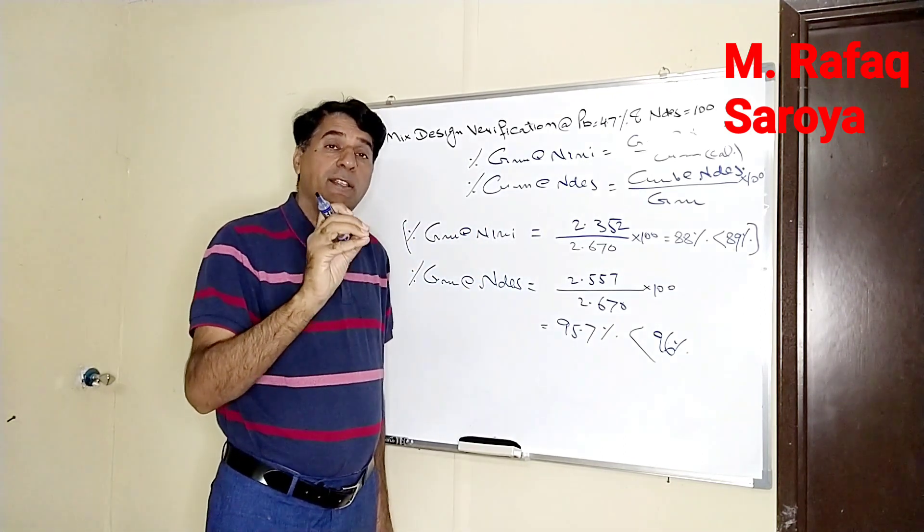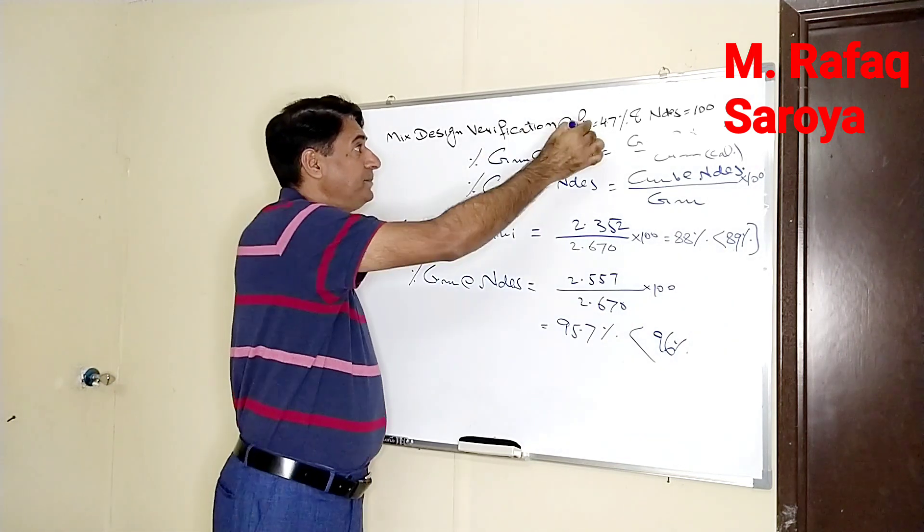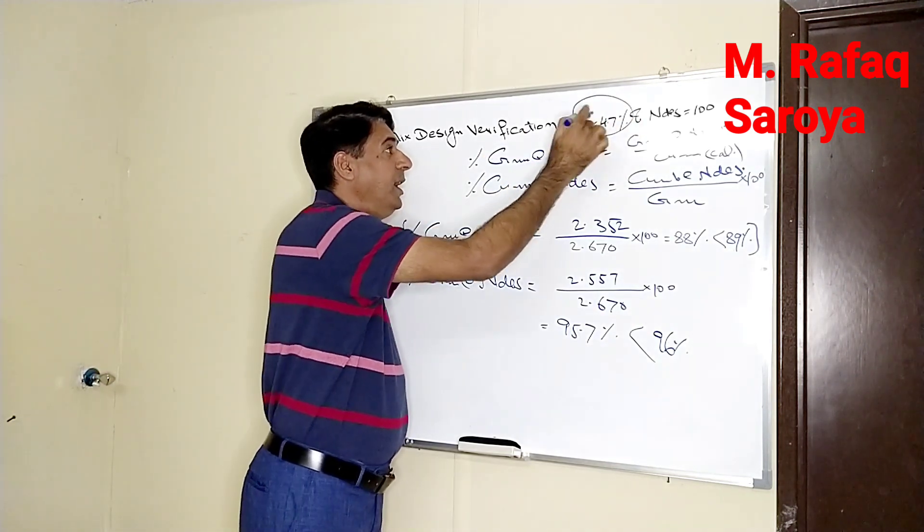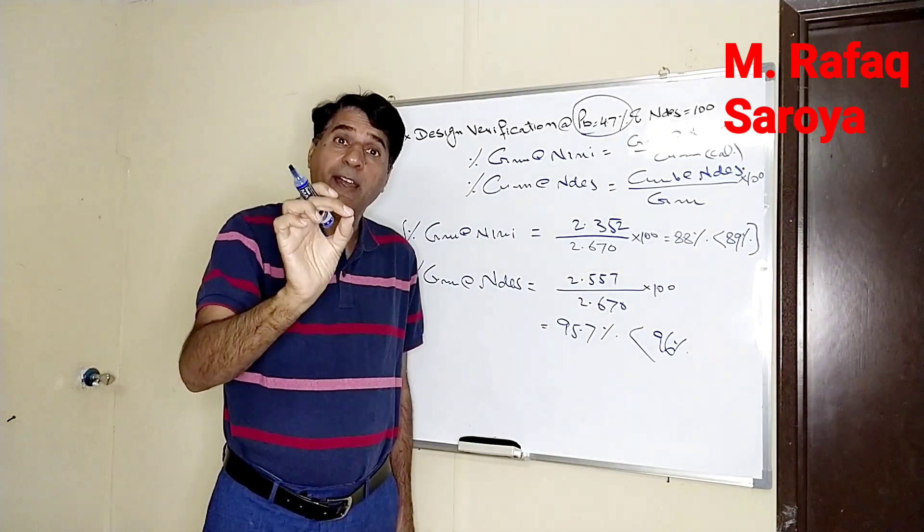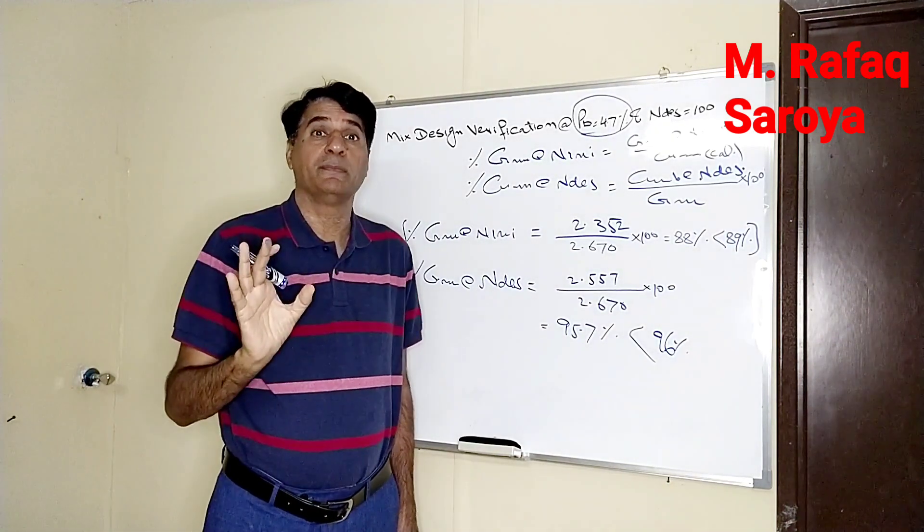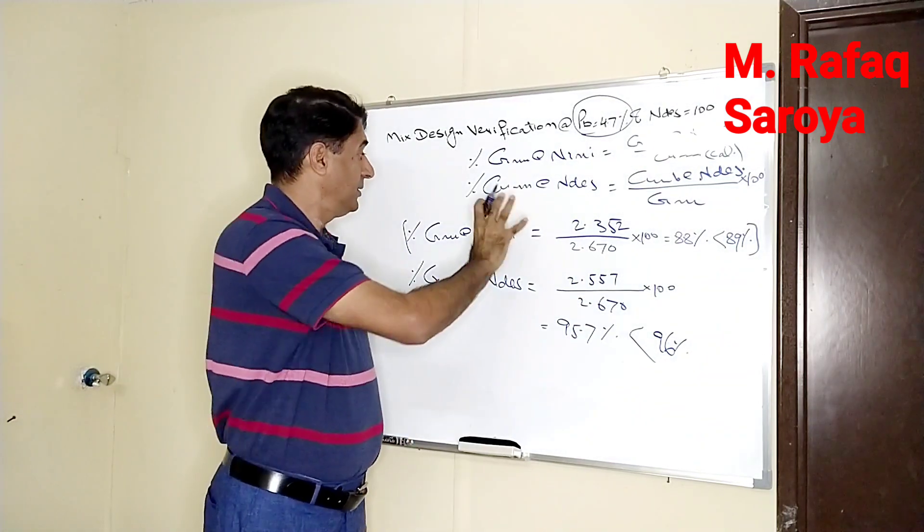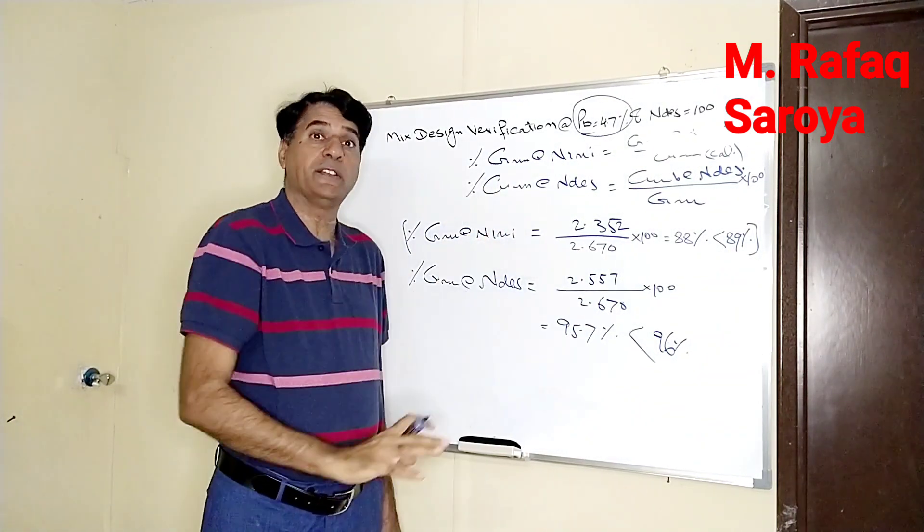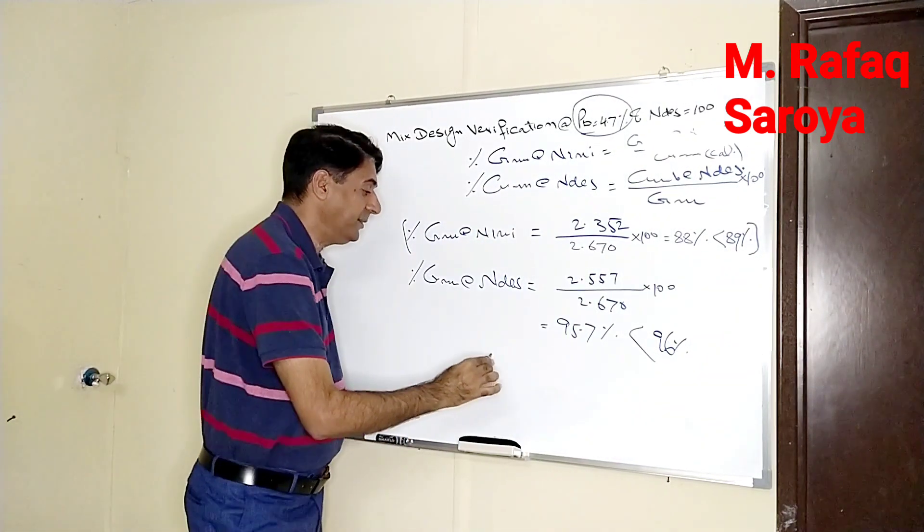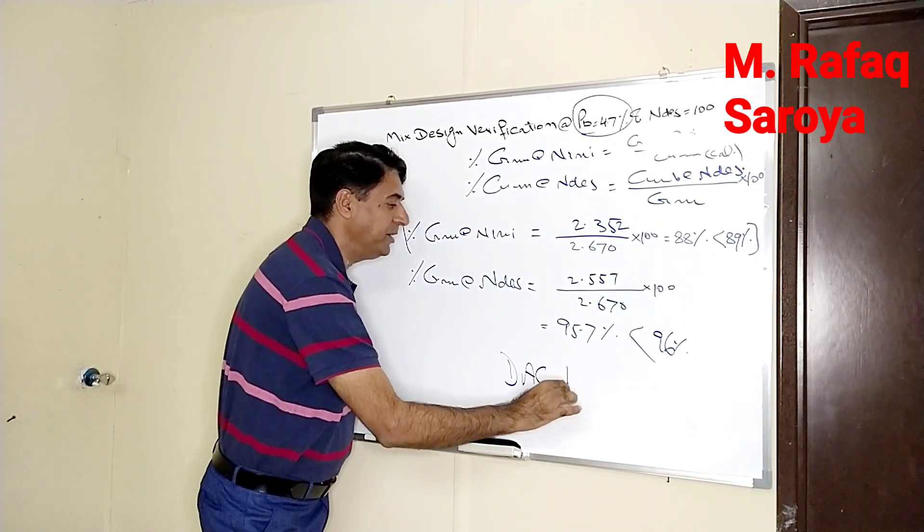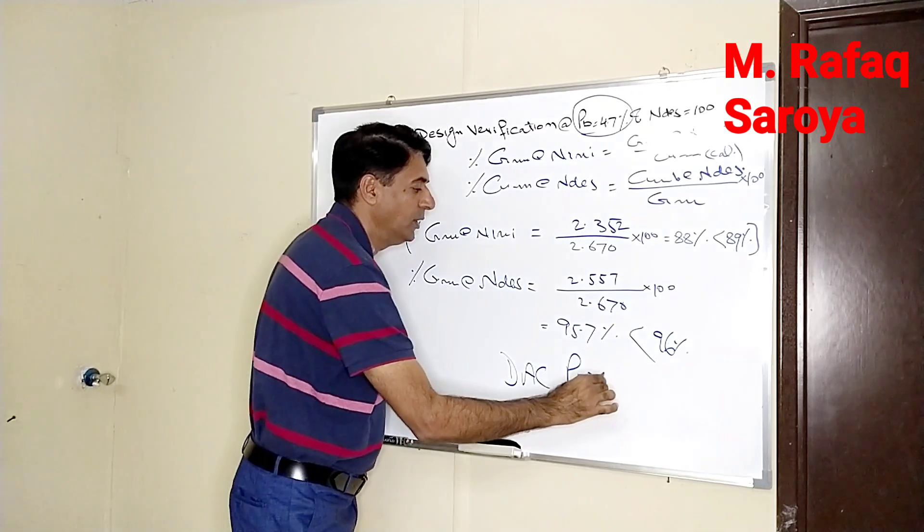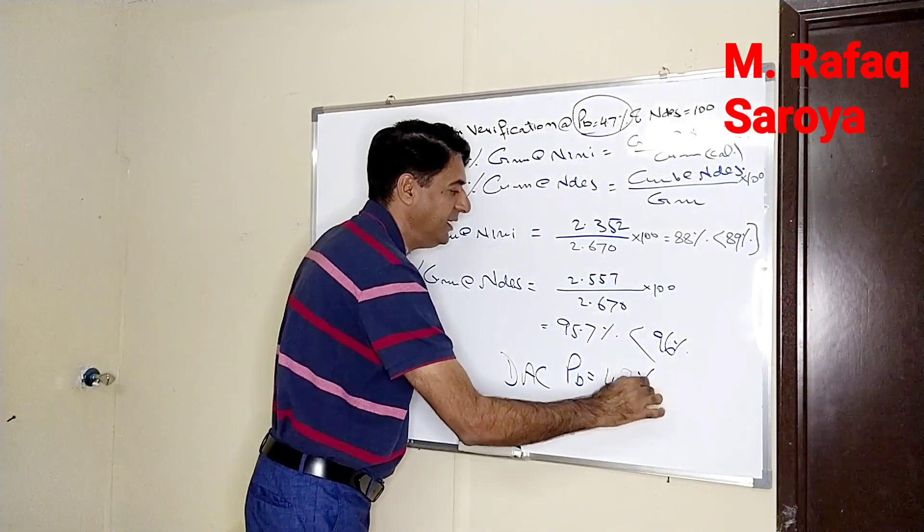Mark my word, this binder content is going to satisfy all the parameters specified for the Superpave specification. Hence, by also considering these two factors, we can say that our design asphalt content which is PB equals 4.7% is acceptable.